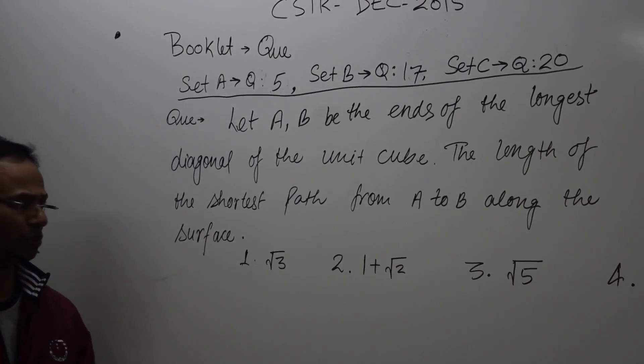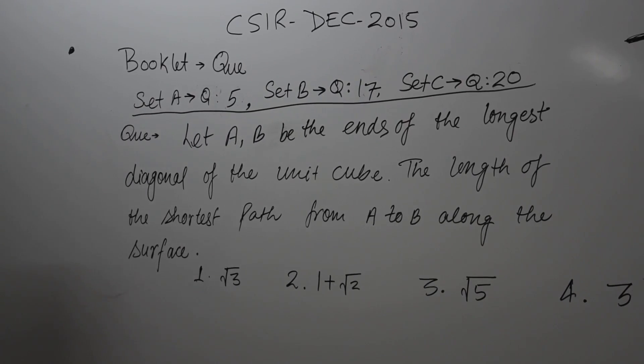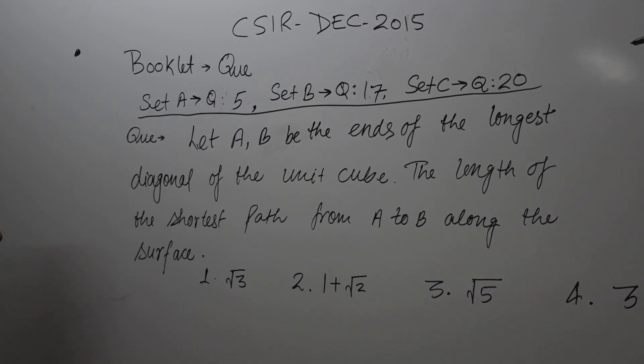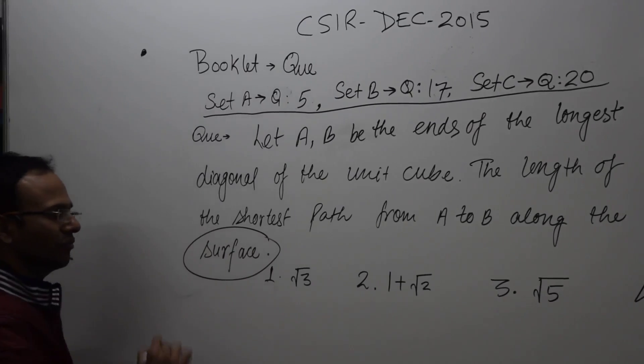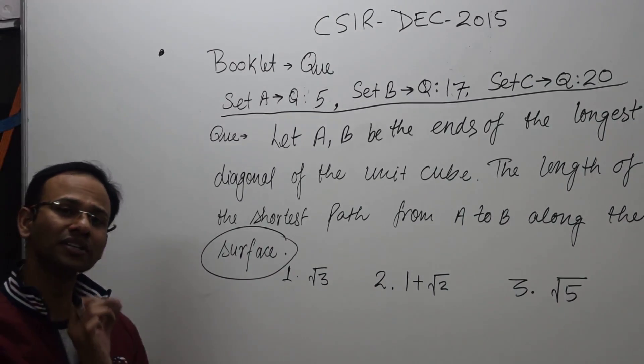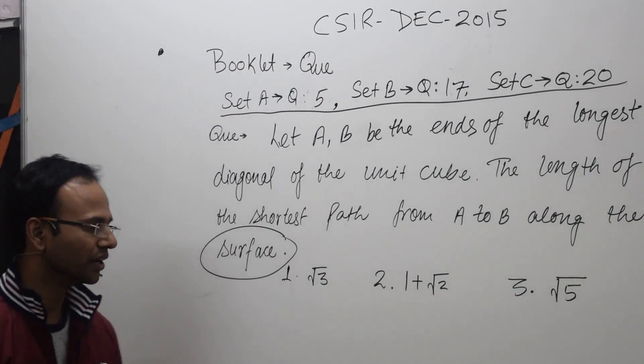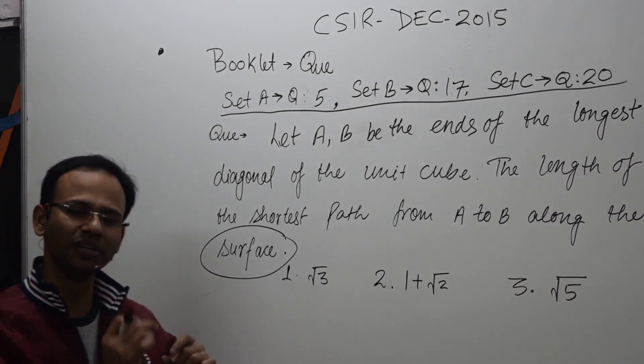The length of the shortest path from A to B along the surface—we should respect this word 'along the surface,' right? If it is not along the surface, if it is only the shortest distance, then it would be along the diagonal. But the question says along the surface, so the answer will be changed.